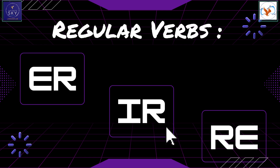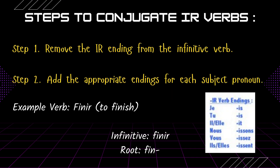Next up, we have IR ending verbs. These verbs follow the same conjugation pattern but with different endings. For je and tu, the ending is -is. For il and elle, it is -it. For nous, it is -issons. For vous, it is -issez. And for ils and elles, it is -issent.